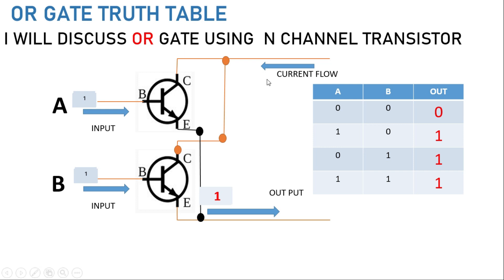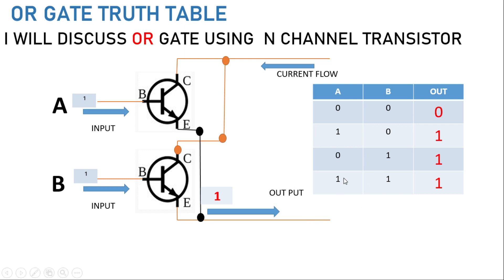For the OR gate: if transistor A is high and transistor B is low, then since either A or B is high, the output will be high. If transistor A input is low and transistor B input is high, then as I said, if anyone is high the output will also be high. In case both transistor bases are high, the output is also high. This is the truth table of the OR gate.